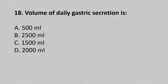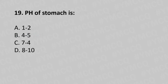Now let's move to question number 18. Volume of daily gastric secretion is: Option A: 500 ml. Option B: 2500 ml. Option C: 1500 ml. Option D: 2000 ml. And the answer is Option B: 2500 ml.